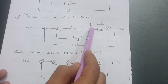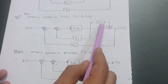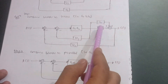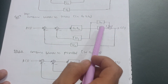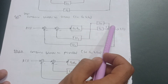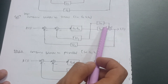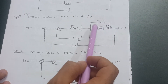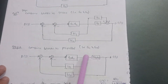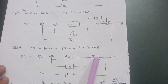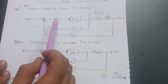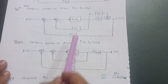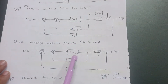The next step is to combine blocks in parallel. I am observing here these two blocks are in parallel. Whenever blocks are in parallel, you add them according to the sign at the summing point. Here it is positive and positive, so you add G3 plus G4. I am writing G3+G4 as one box. The rest of the things remain the same: summing points, G1G2, H1, H2.